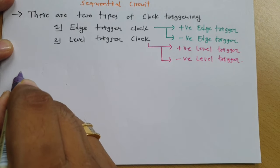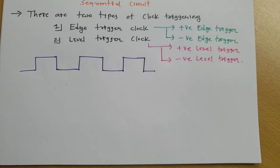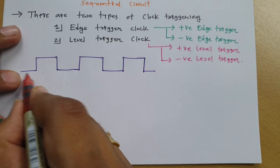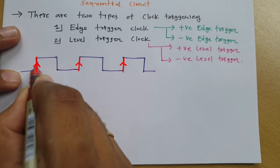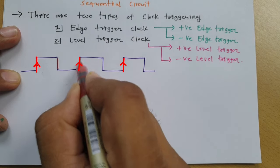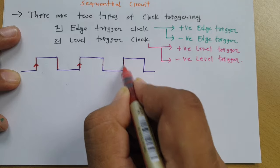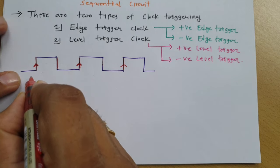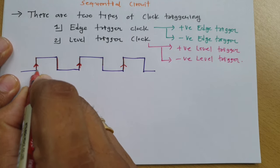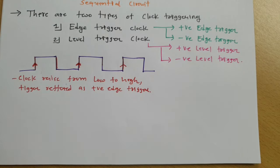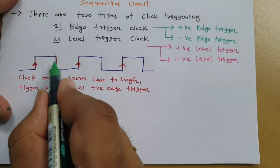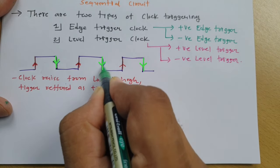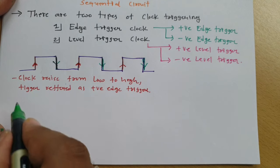Let us try to understand this with a practical example. Here I am drawing a clock signal. In this clock signal, when the clock is rising from low to high — at this instant, when the clock rises from low to high — this is referred to as positive edge triggering. When the clock falls from high to low, if triggering happens during that time period, then that is referred to as negative edge triggering.